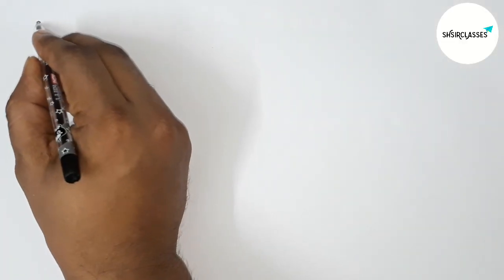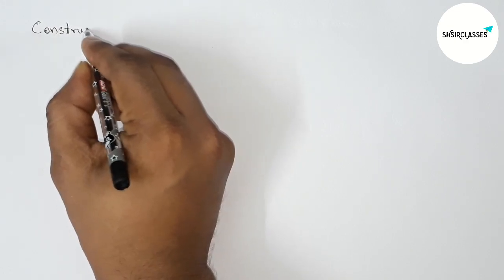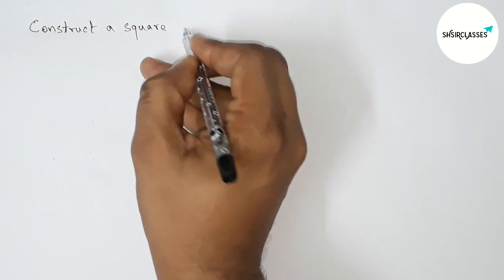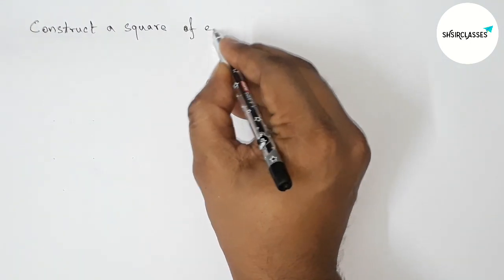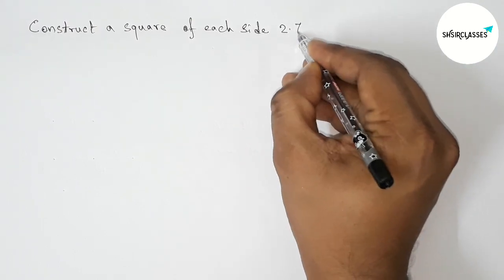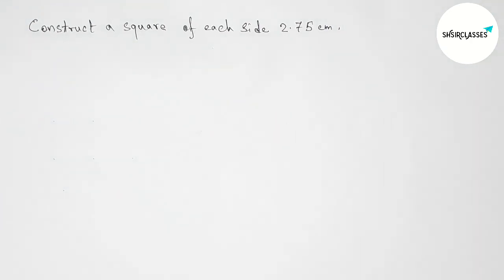Hi everyone, welcome to SI Share Classes. Today in this video, we have to construct a square of each side 2.75 centimeter in an easy way. Please watch the video till the end. Let's start the video.